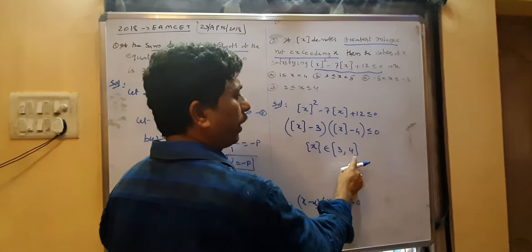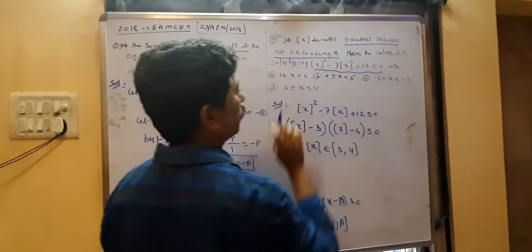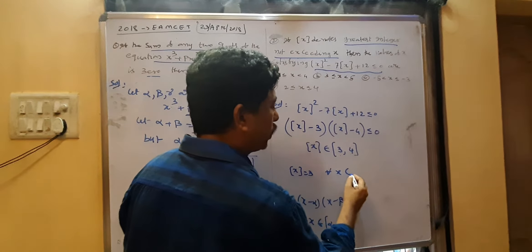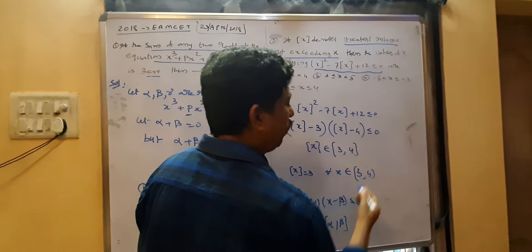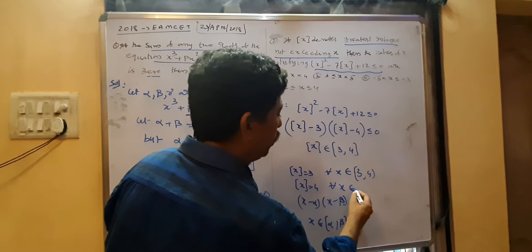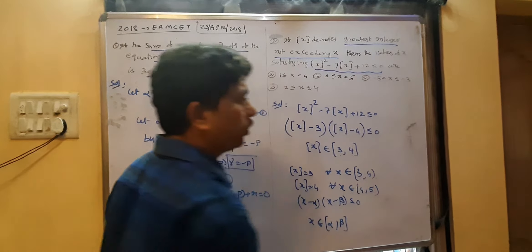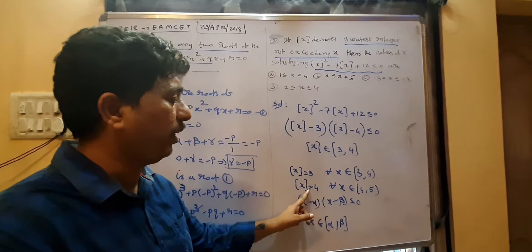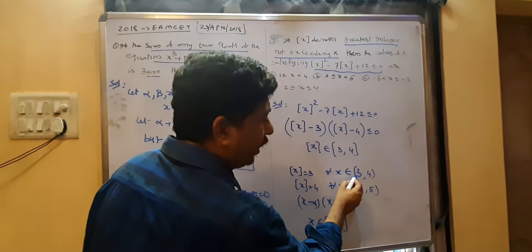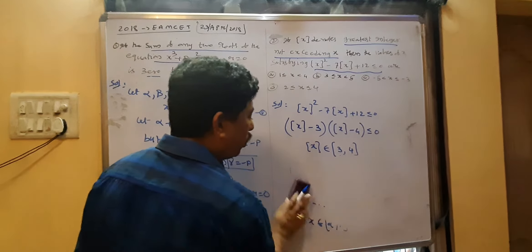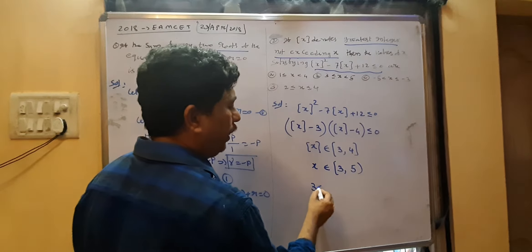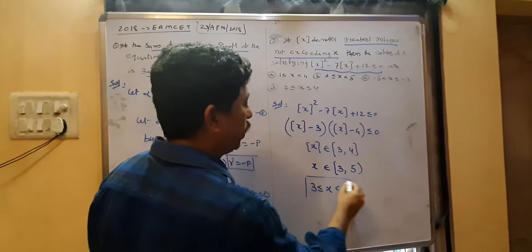Step x equal to 3 means for every x belonging to [3, 4). Step x equal to 4 means for every x belonging to [4, 5). Combining both intervals, including 3 and up to open bracket 5, x belongs to [3, 5). So 3 ≤ x < 5 is the answer.